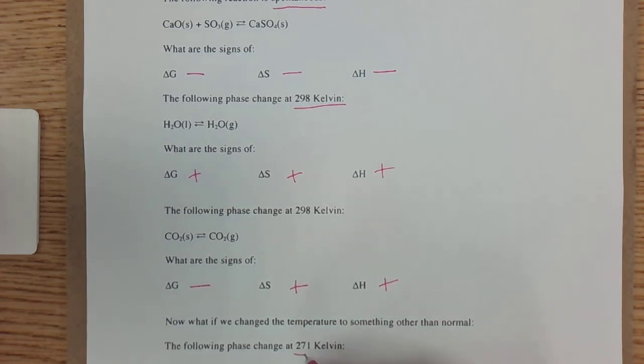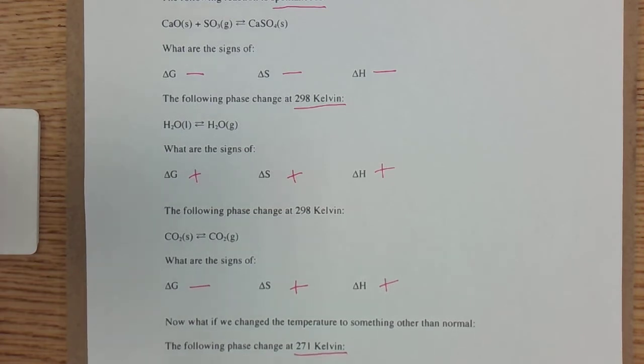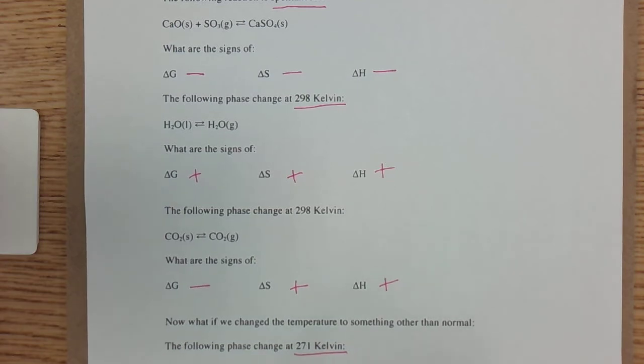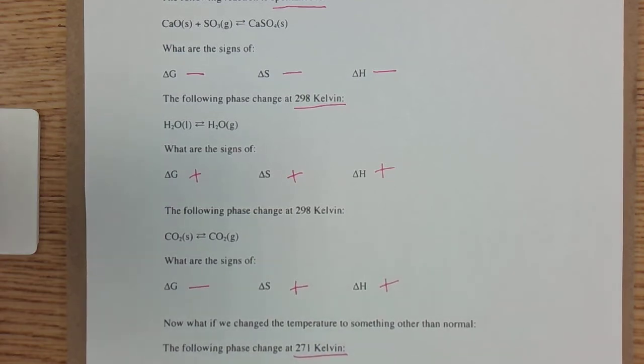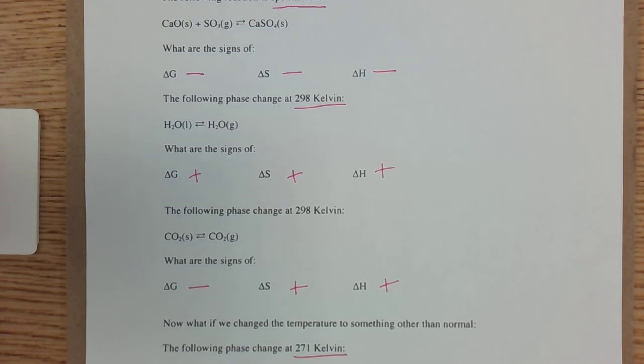Now, 271 Kelvin is a temperature beneath the freezing point of water. Does ice spontaneously melt beneath the freezing point of water? No. So ΔG must be positive. We know ΔS is positive because a solid goes to a liquid—that's more disorder. And we also know that to cause ice to melt, we have to heat it. So that's a positive ΔH.